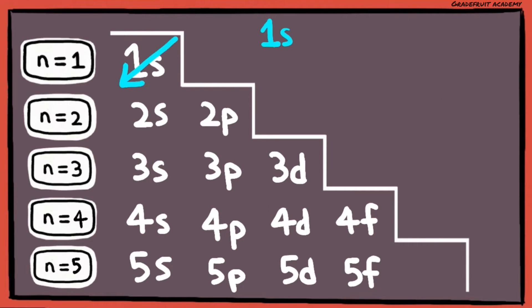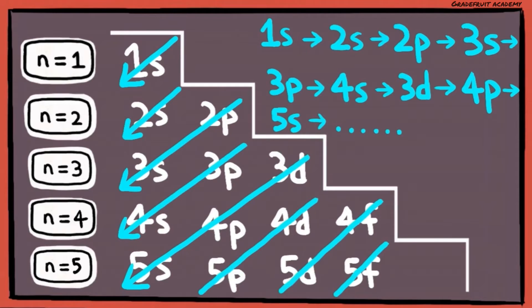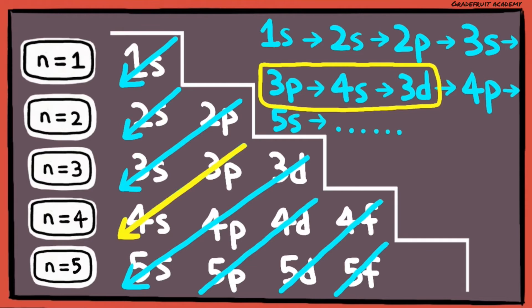So the electrons will be filled from the 1s, to 2s, to 2p, to 3s, to 3p, to 4s, to 3d, to 4p, and so on. Notice that there is this part here which does not follow the pattern? That's because the 4s orbital has a lower energy level than the 3d orbitals. Hence, the 4s orbitals will be filled first.